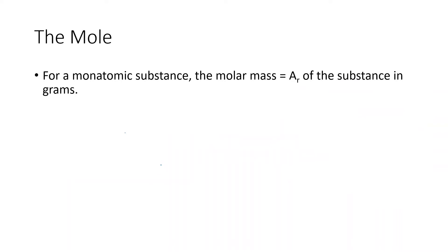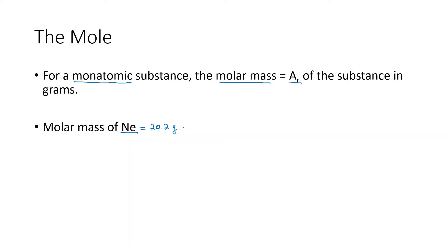For a monatomic substance, the molar mass is just the Ar of the substance in grams. For example, neon exists as single atoms — it is monatomic. We take its Ar or mass number from the periodic table, which is 20.2, and slap on the unit grams. So 20.2 grams consists of one mole of neon atoms, containing 6.02 × 10²³ neon atoms. Similarly, for magnesium and metals in general, we consider them to be monatomic — take the Ar, 24.3, and add grams.